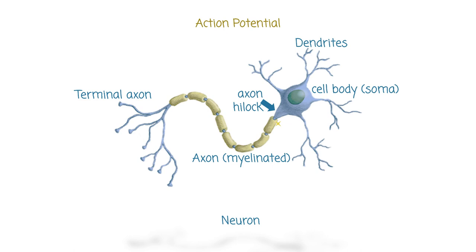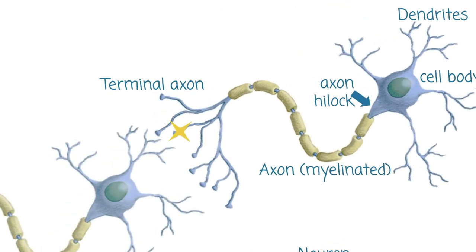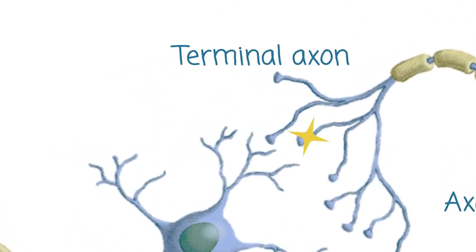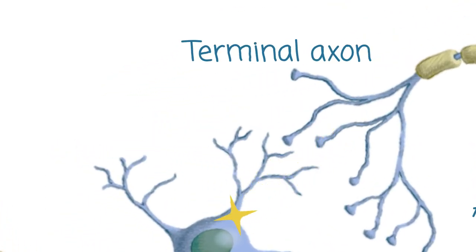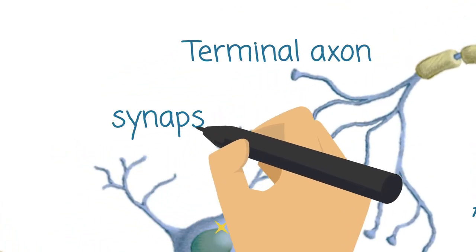The axon's function is transferring an electrical message from the dendrites to the axon terminal. Generally, this message will be transferred to either another neuron or a muscle fiber. The connecting part of the terminal axon to the dendrites of another neuron is called a synapse.